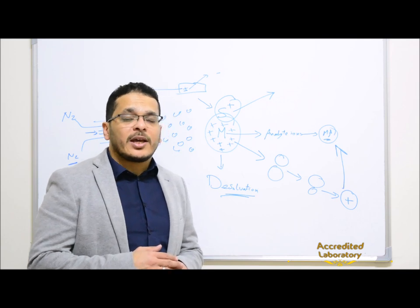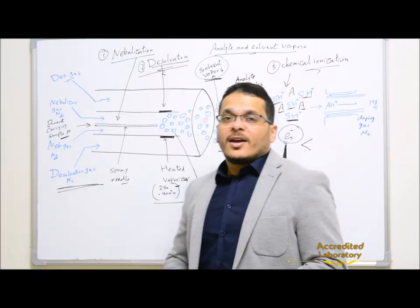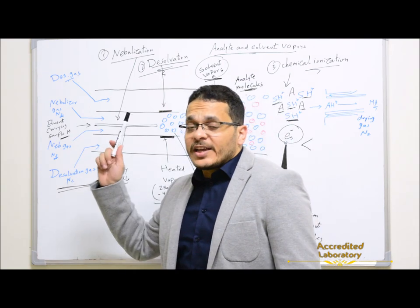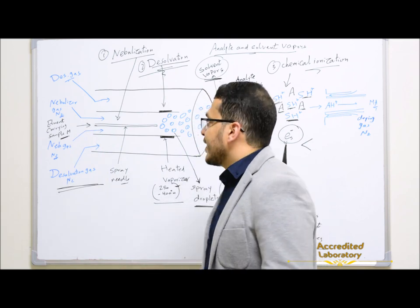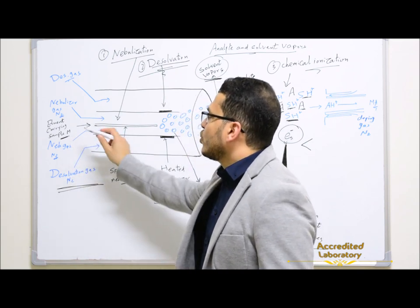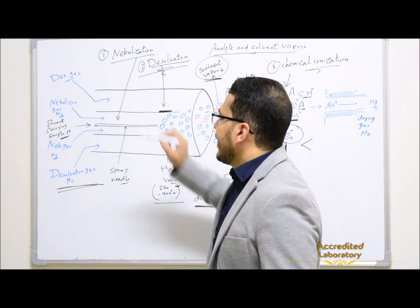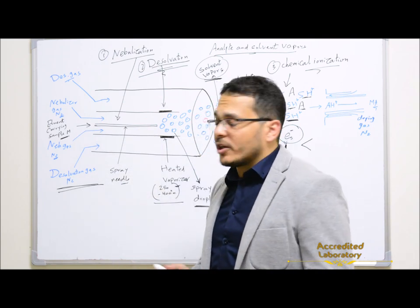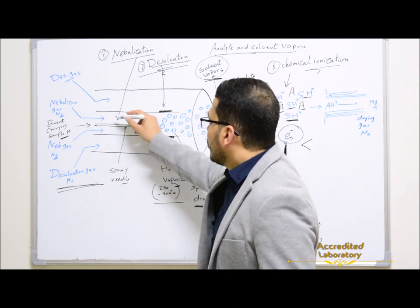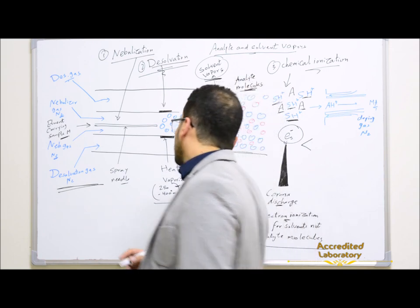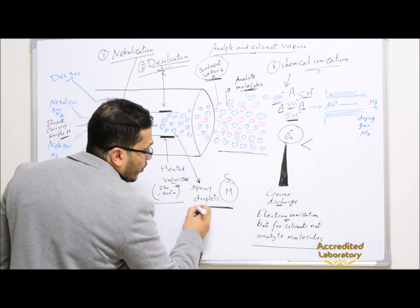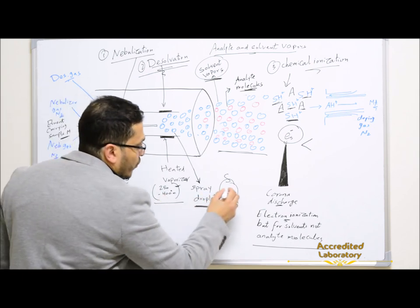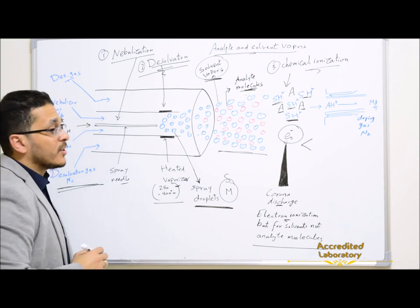Today's lecture will be about atmospheric pressure chemical ionization. As we see in this graph, mobile phase from HPLC carries the sample molecules, and the eluent carrying sample molecules will pass through the spray needle. By the effect of nebulizer gas, or sheath gas, or nitrogen gas, that shears around the eluent carrying sample molecules, converting them to spray droplets that consist of sample molecules surrounded by solvent molecules.